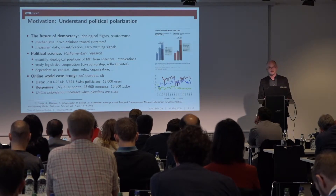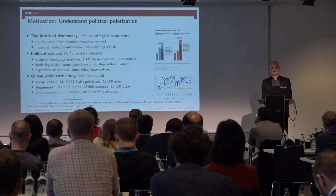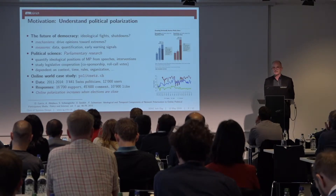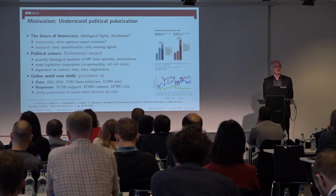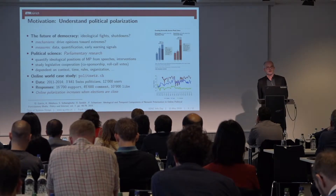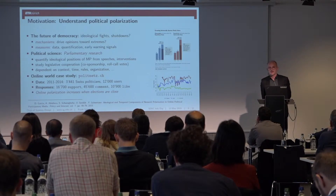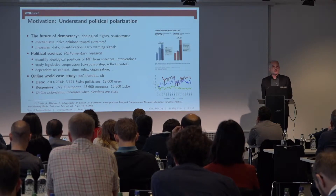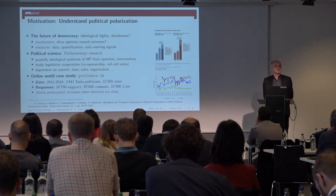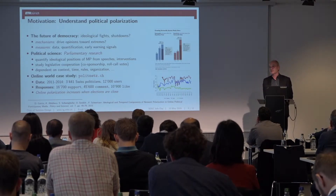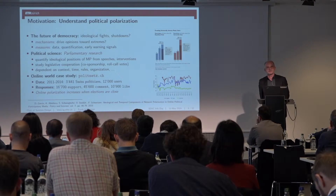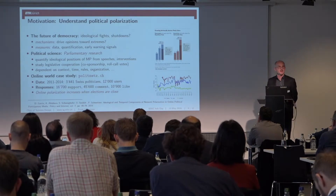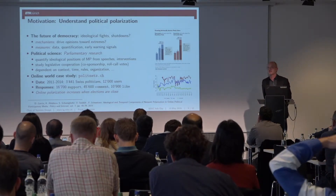Here's one example: we could hopefully better understand political polarisation. Looking at the graph on the top right, you see increasing polarisation in the US in the relation between the Democratic and Republican Party. We all know from the news that this has severe consequences for the functioning of democracy — we are not interested in ideological fights or government shutdowns because politicians are unable to reach consensus.